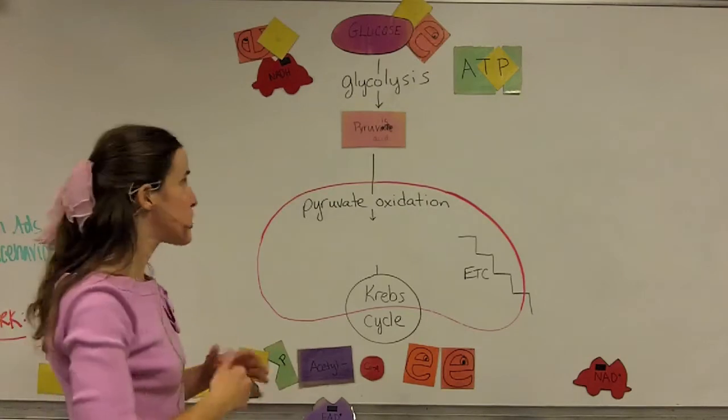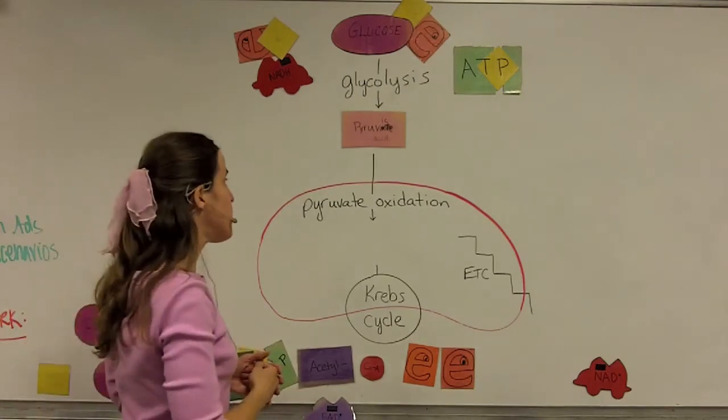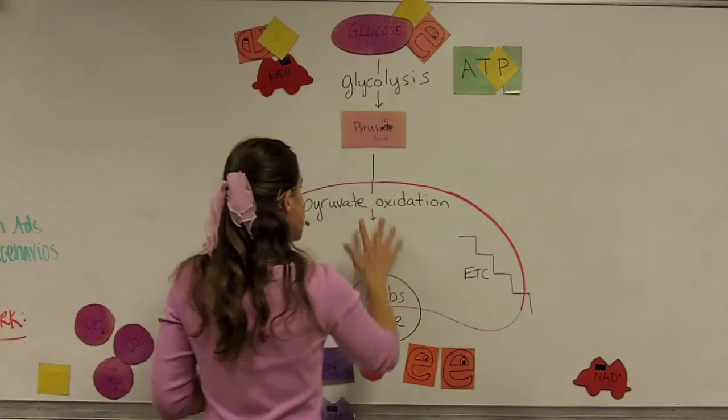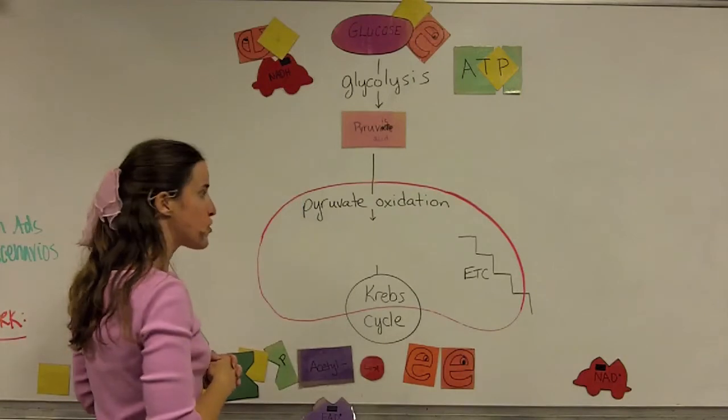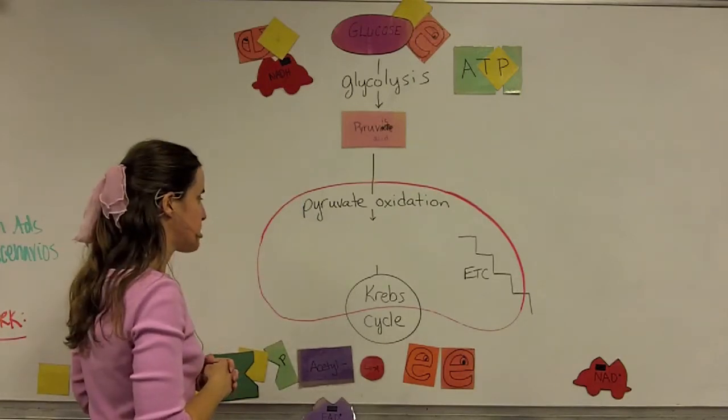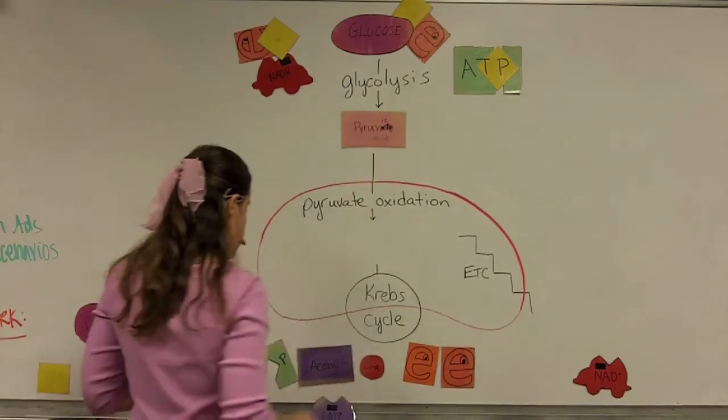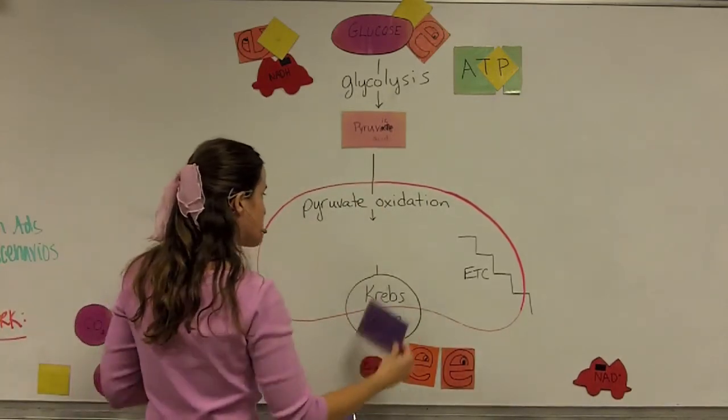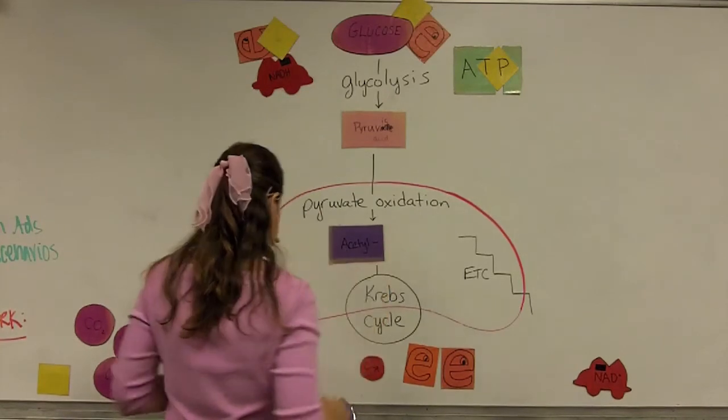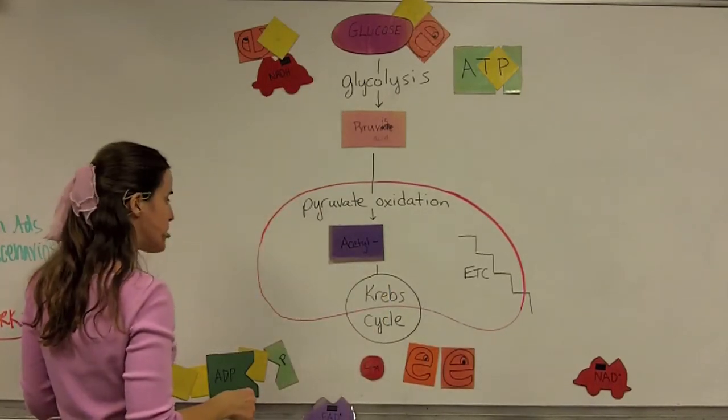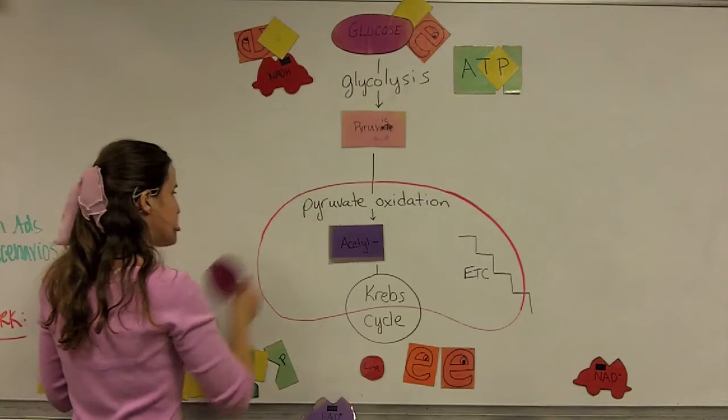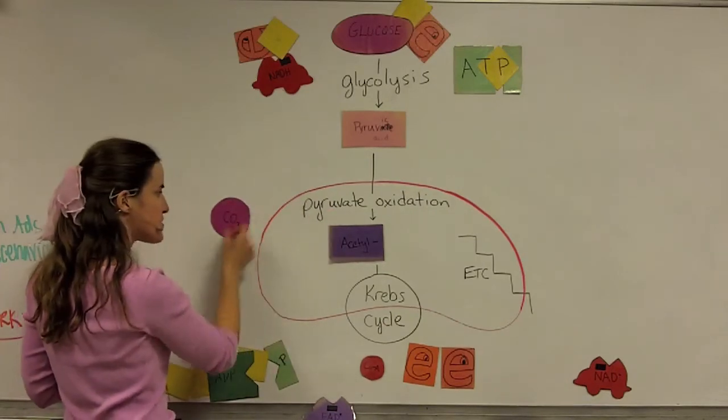If this is a eukaryotic organism and there's oxygen available, the pyruvic acid will enter the mitochondria and undergo pyruvate oxidation. In the process of pyruvate oxidation, the carbon molecule is further broken down from a 3-carbon molecule to a 2-carbon molecule called acetyl. The third carbon is released in a molecule of carbon dioxide.